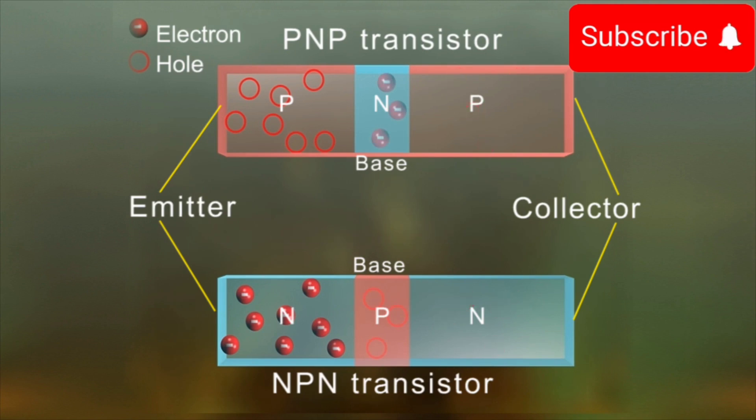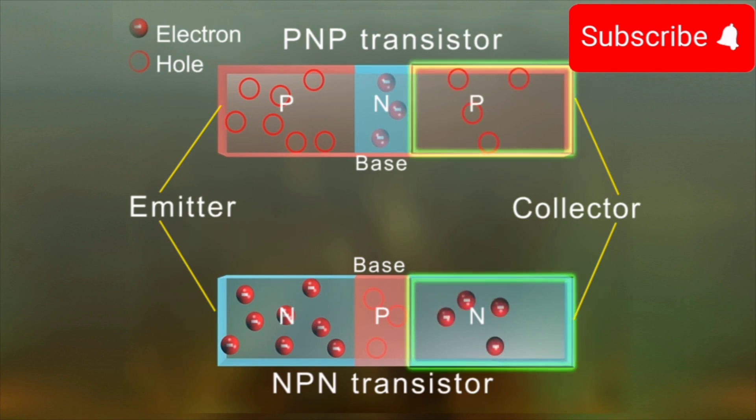The amount of impurities in the materials used for the collector are more than that in the base but less than that in the emitter. The collector also has more volume than the emitter.